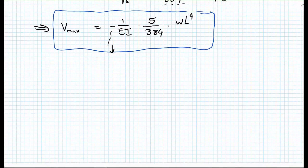This is a common formula — definitely one you will half-remember for most of your careers — for the deflection of a UDL on a beam. There are standard formulas for common cases such as a UDL on a beam, a point load on a beam, and a point load on a cantilever, used by engineers to quickly get a ballpark answer. We'll leave this video here; the rotations will be covered in a later example.